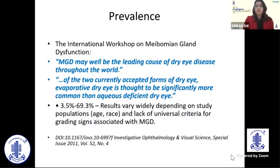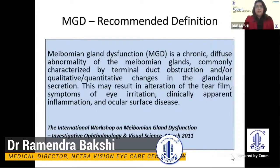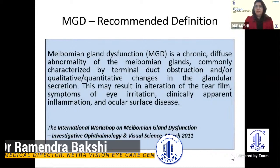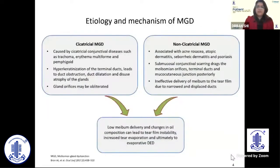Of the two types of dry eye — aqueous deficient dry eye and evaporative dry eye — evaporative dry eye could be the commonest cause of dryness, and the prevalence could be as high as 69.3%. They gave this definition of MGD: it is a chronic diffuse abnormality of the meibomian glands, characterized by terminal duct obstruction, as well as qualitative and quantitative changes in the glandular secretion, resulting in alteration of the tear film, symptoms of eye irritation, and clinically apparent inflammation and ocular surface disease.